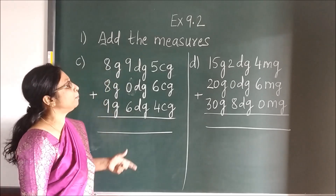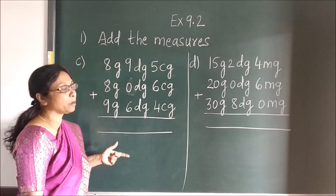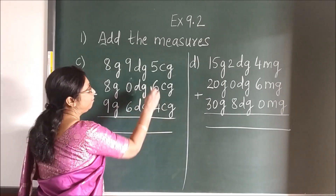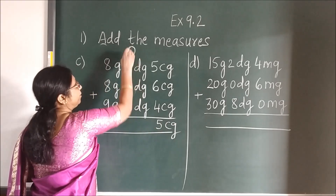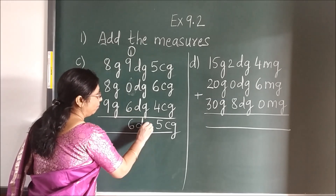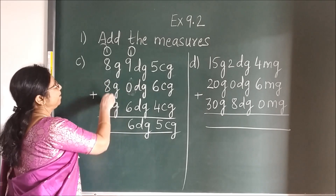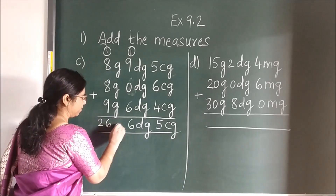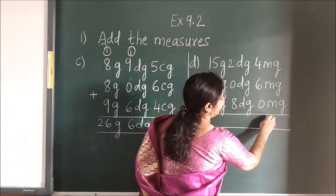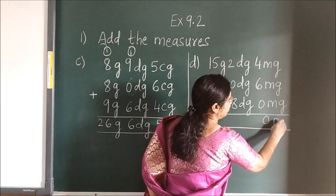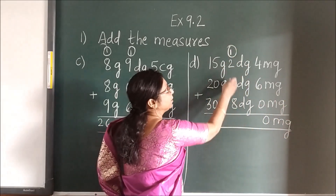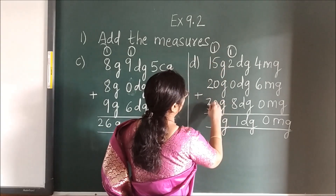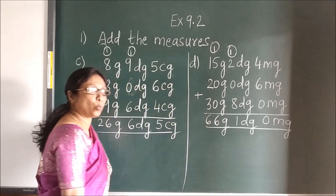Here also — C and D sum, same step. You will first arrange it — write the numbers. Below CG, which numbers are coming? Below DG? And G? Where there is no number, place 0. Then carry out simple addition: 6 plus 4 is 10, 10 plus 5 is 15 — write 5 and carry 1. Then 9 plus 1 is 10, 10 plus 6 is 16 — carry 1. Again: 9 plus 1 is 10, 10 plus 8 is 18, 18 plus 8 is 26. Then simple addition again: 6 plus 4 is 10, carry 1. 8 plus 2 is 10 plus 1 is 11 — carry 1. Then 5 plus 1 is 6, 3 plus 2 is 5, 5 plus 1 is 6. In this way you can carry out the addition.